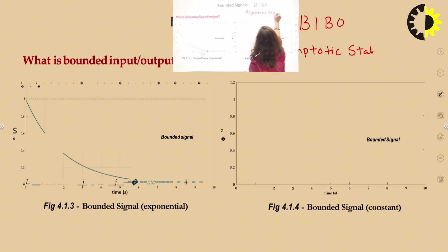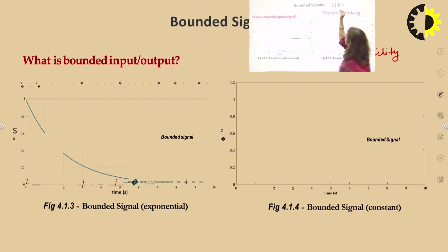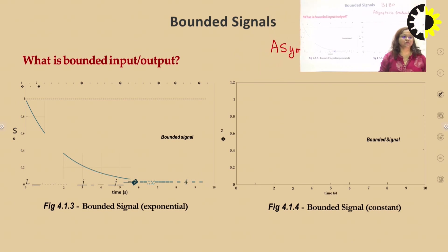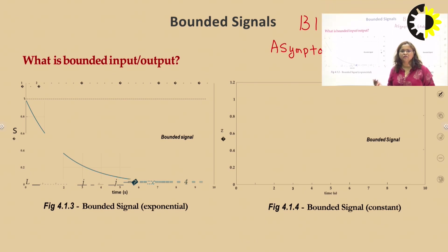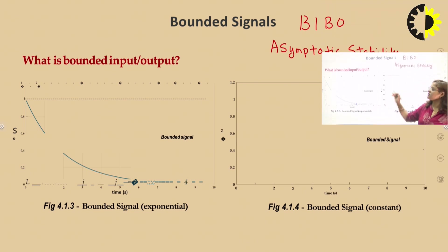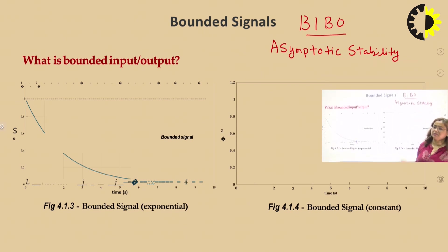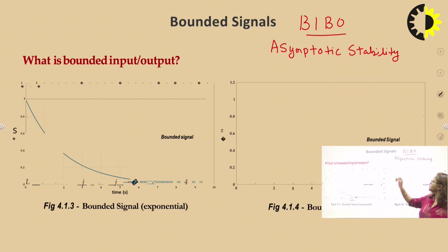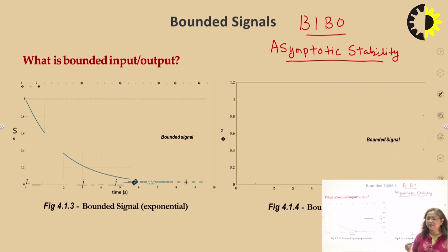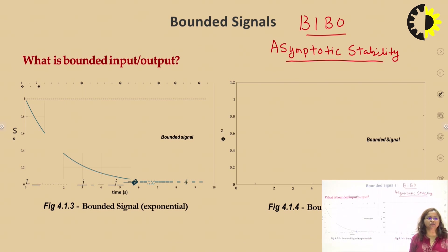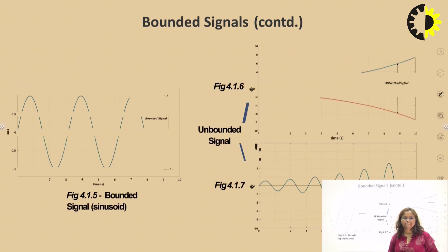If we talk about BIBO stability — bounded input bounded output — for any system, if we give a finite input and the response of the system becomes finite, then the system is termed BIBO stable. Whereas if we talk about asymptotic stability, if the response of the system is of decaying nature, that is as t tends to infinity the response tends to 0, then the system is termed asymptotically stable.